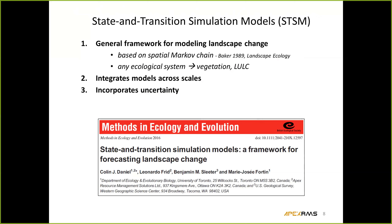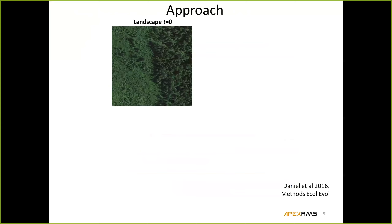It's also possible to use this approach to integrate different kinds of models across scales. Two of the case studies I'll be talking about today integrate different models — one integrates climate models, another integrates models of grazing animal behavior. And finally, this approach can incorporate uncertainty about our knowledge of the rangelands we're working in, and also anticipate uncertainty about what might happen in the future. A publication describing this approach is available in Methods in Ecology and Evolution. I'll walk through a simple forest ecosystem example to illustrate how it works — showing how general the approach is.